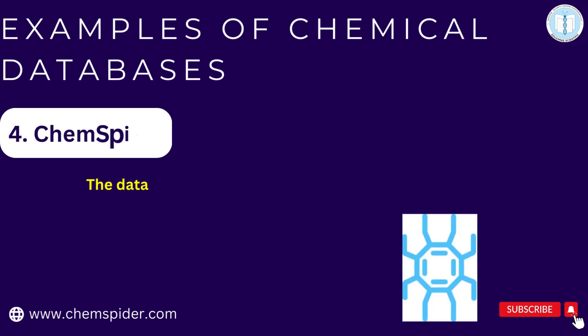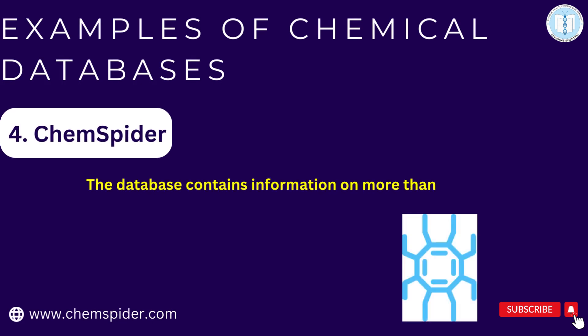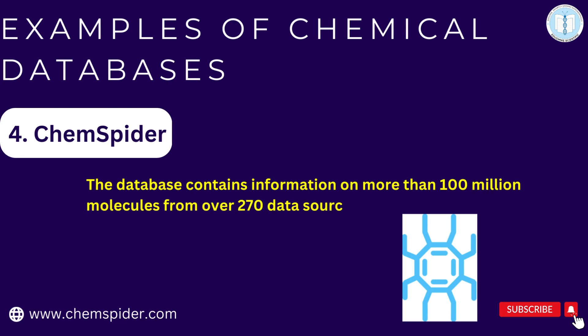Fourth is ChemSpider, a database with information on chemical compounds, structure, spectra and physical attributes. It is maintained by the Royal Society of Chemistry.